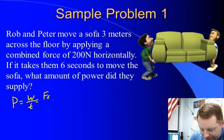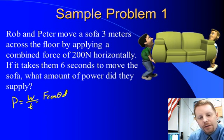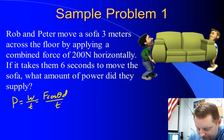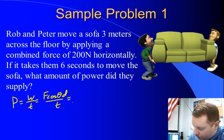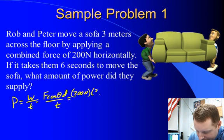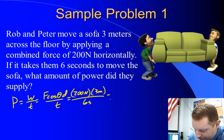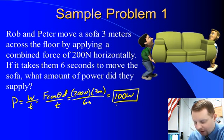Work is F cos theta, the force in the direction of the displacement divided by time. cos theta is 0 or 1, so we end up with force 200 newtons times the displacement 3 meters over the time of 6 seconds for a grand total of 100 watts of power.